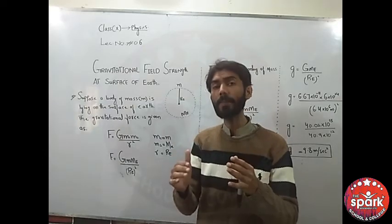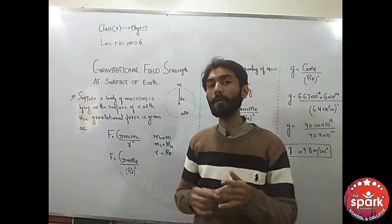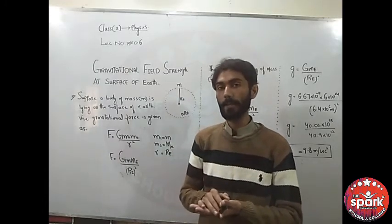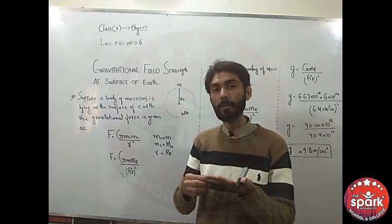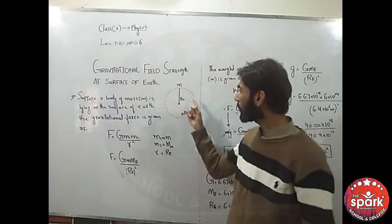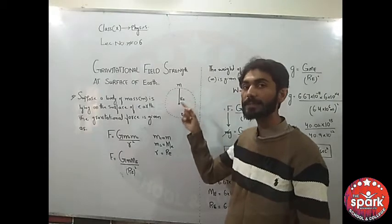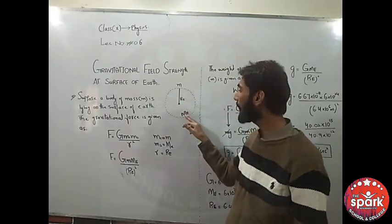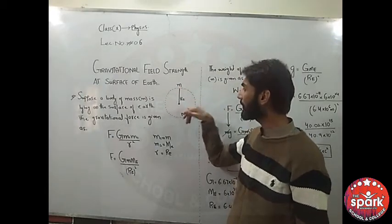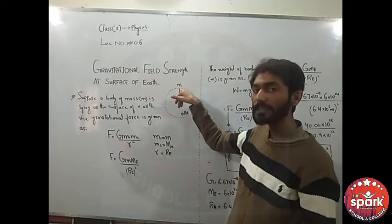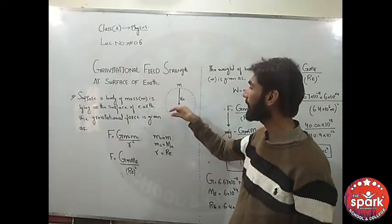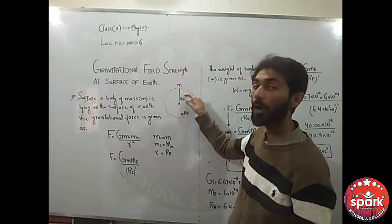The body is on the surface of Earth. This body has mass m, and Earth has mass Me. The distance from the center of Earth to the body is the radius of Earth, Re.